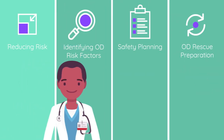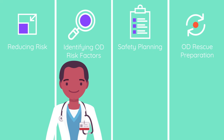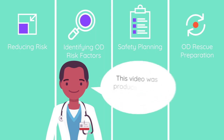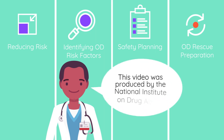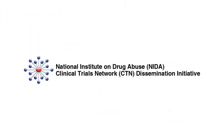In closing, reducing risk of the development of opioid use disorder or opioid misuse, identifying overdose risk factors, safety planning, and overdose rescue preparation are an essential group of strategies to help reduce the risk of overdose in patients being treated for chronic pain. This video was produced by the National Institute on Drug Abuse and should not be used as guidelines or an exhaustive review of procedures. For additional information, please refer to the hyperlinked resources in the overview of the video featured below.